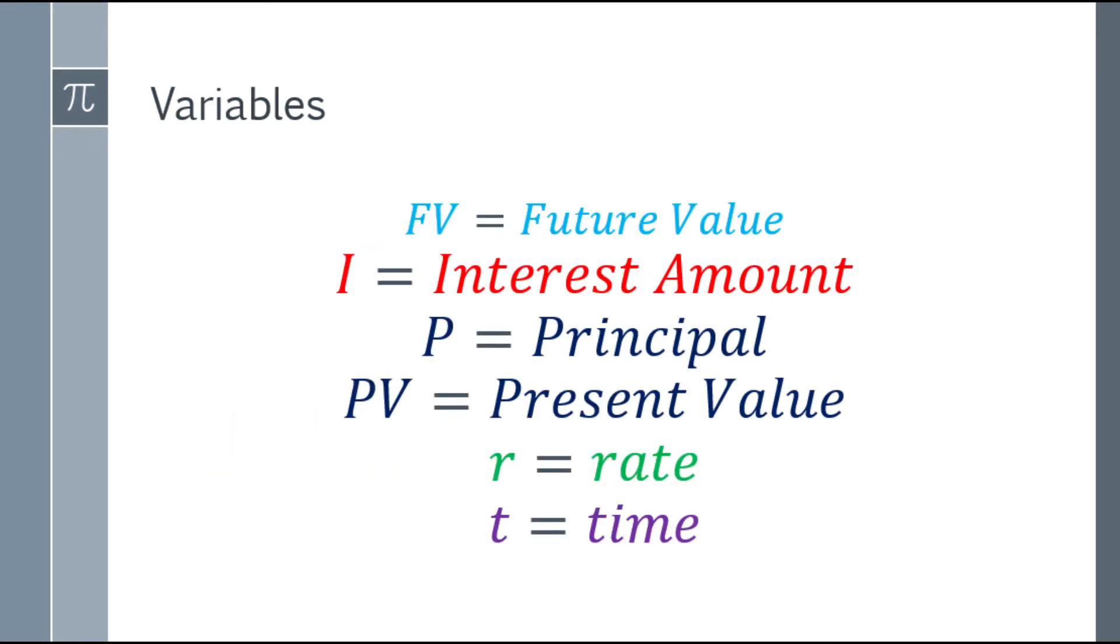In a refresher for the variables: FV means future value, I is the interest amount, P is for principal, PV is present value, R is equal to rate, and T is time.